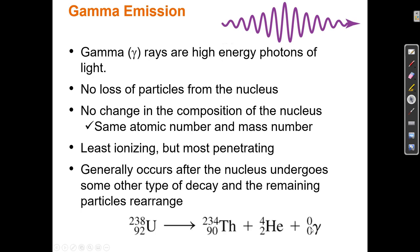Even though ejecting a gamma ray by itself would not change the nucleus, gamma rays are generally not emitted by themselves. Uranium-238 emits both an alpha particle and a gamma ray. Gamma emission generally occurs after the nucleus undergoes some other type of decay and the remaining particles rearrange, releasing extra energy. So uranium-238 loses some energy as an alpha particle and some as a gamma ray, and together they account for the total energy of the unstable uranium atom.